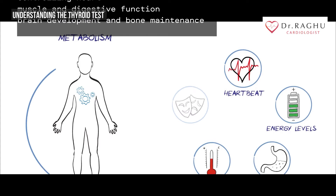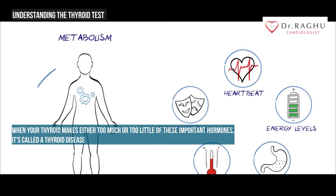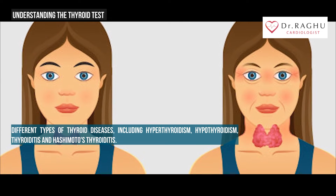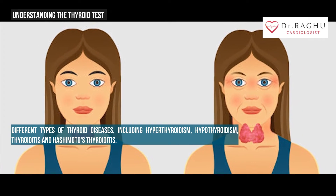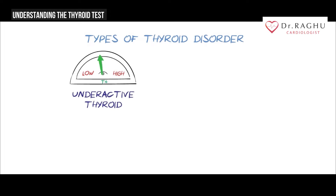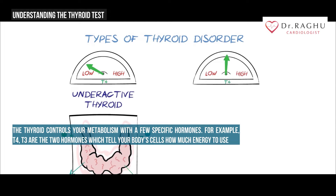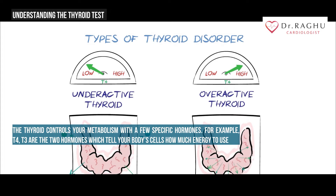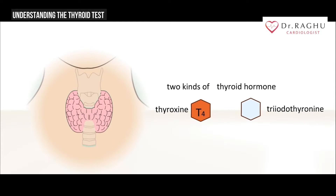The thyroid regulates the body's metabolic rate, controlling heart muscle and digestive function, brain development, and bone maintenance. When your thyroid makes either too much or too little of these important hormones, it's called thyroid disease. There are several different types of thyroid diseases, including hyperthyroidism, hypothyroidism, thyroiditis, and Hashimoto's thyroiditis.